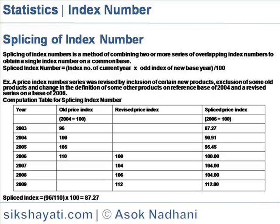The spliced index number is equal to the index number of the current year multiplied by the old index of the new base year, divided by 100.